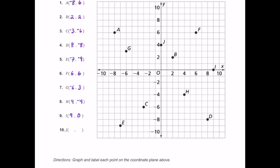And finally for J, it's over on the positive y-axis. Starting from the origin, we're not going to move left or right, so that's zero. But then we move up four units. So the first number is zero and the second number is positive four, giving us zero comma four.